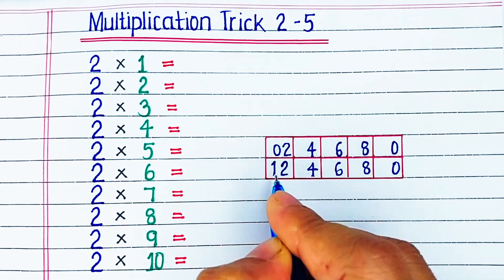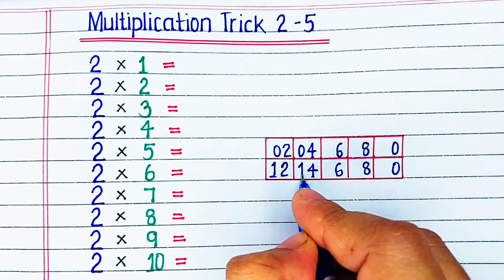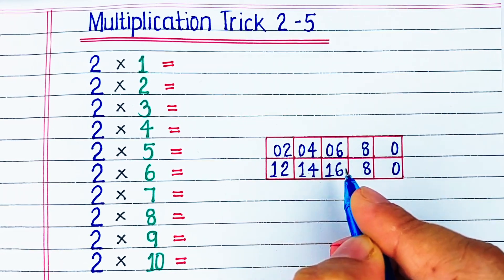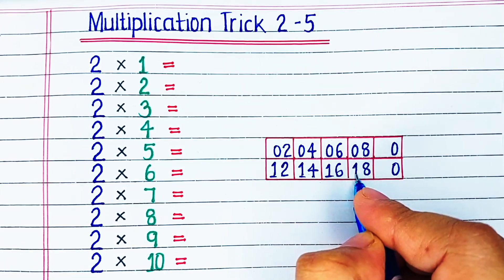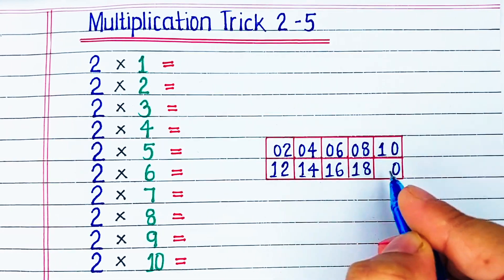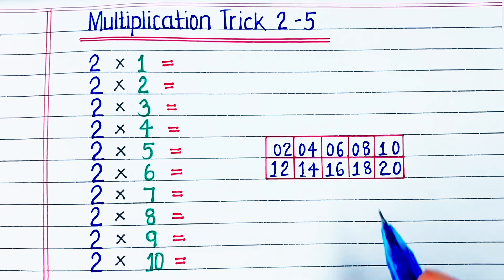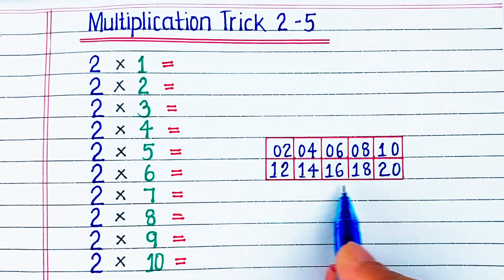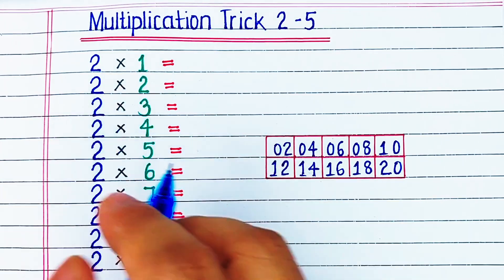Then, in the first column, we will write 0 and 1 and we will continue this up to column number 4. In the fifth and last column, we will write 1 and 2 instead of 0 and 1. So, we have found an easy way to remember the 2 times table.